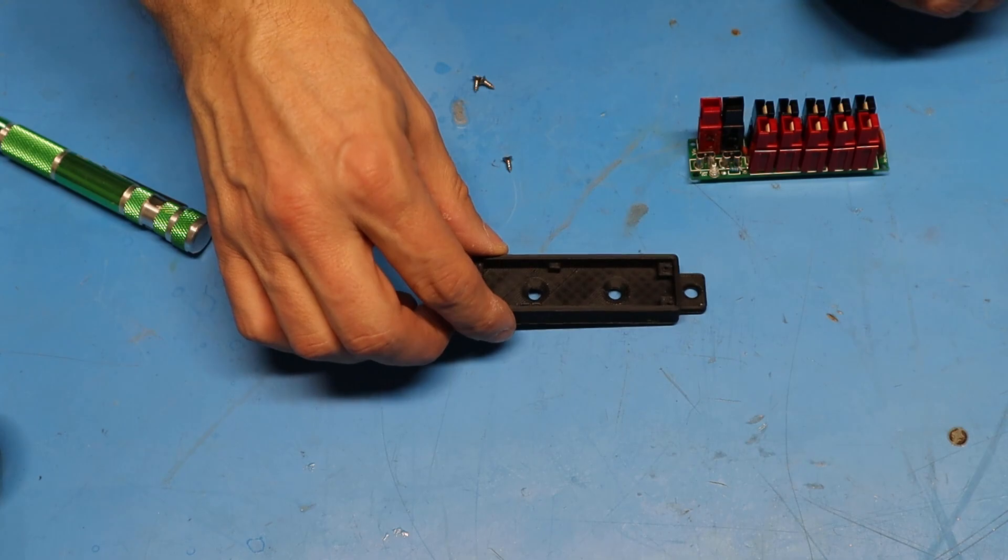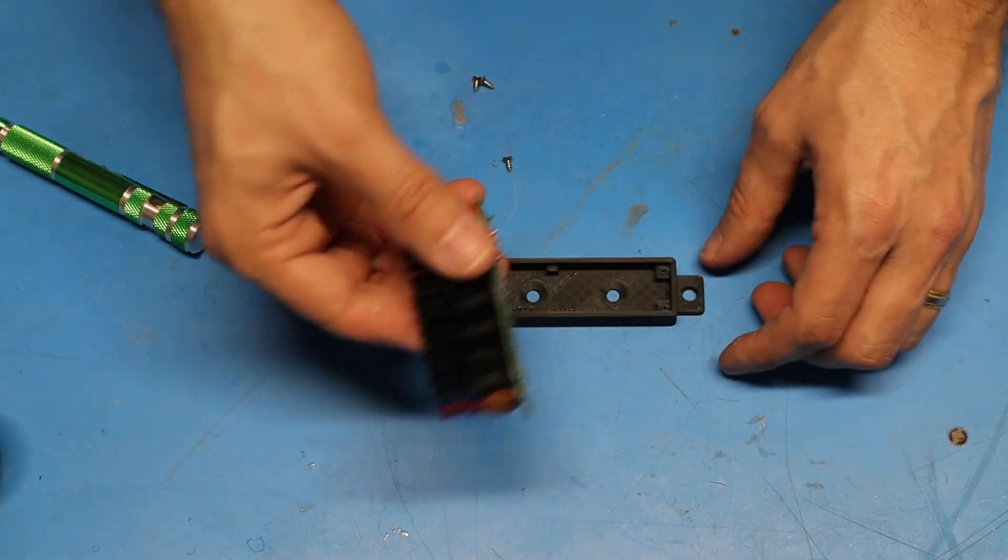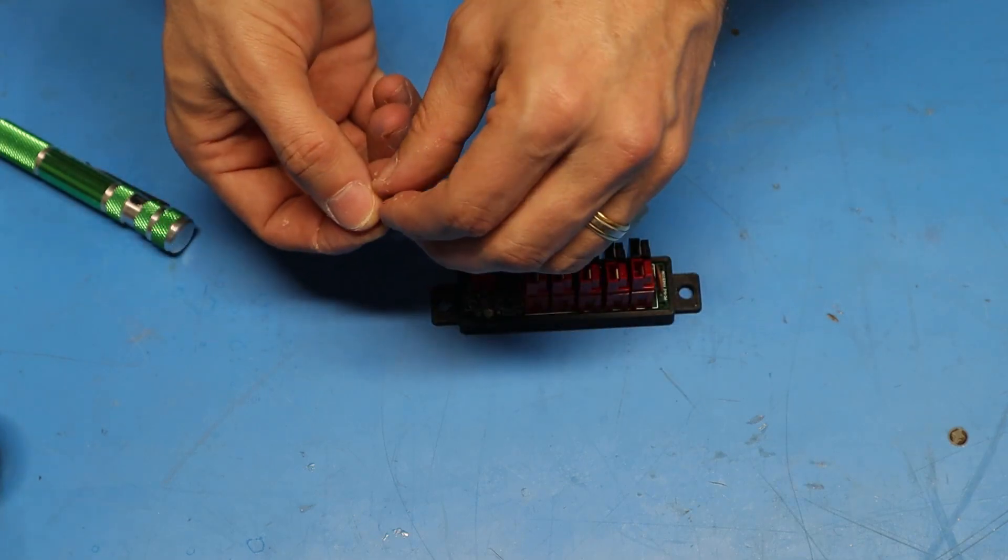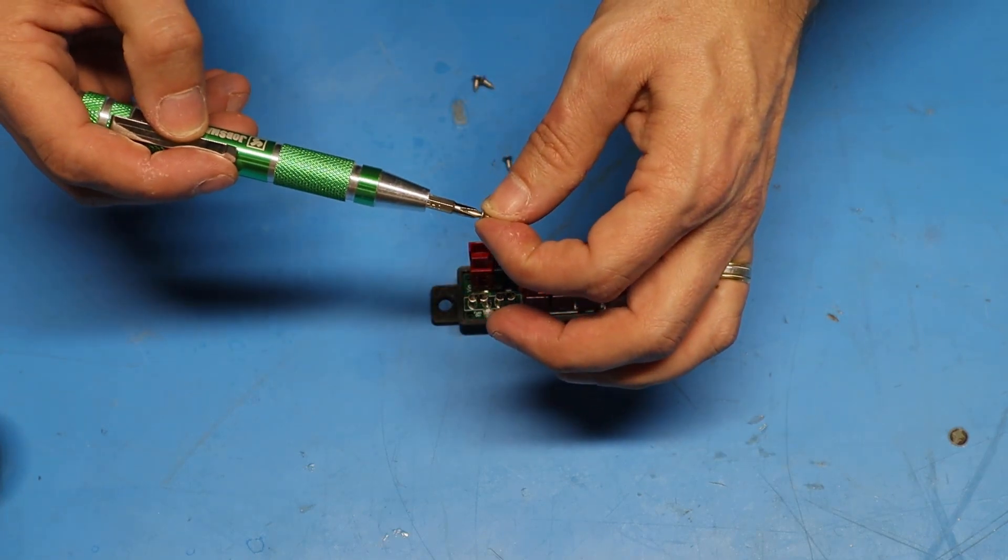Now I've got the 3D printed base that I ordered with the kit. I'm going to put the assembly down in the base and take the supplied screws and screw the board down into the base.